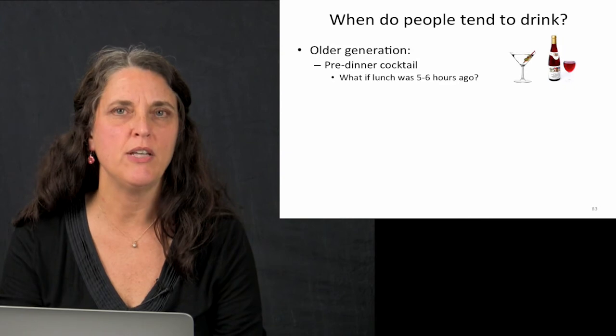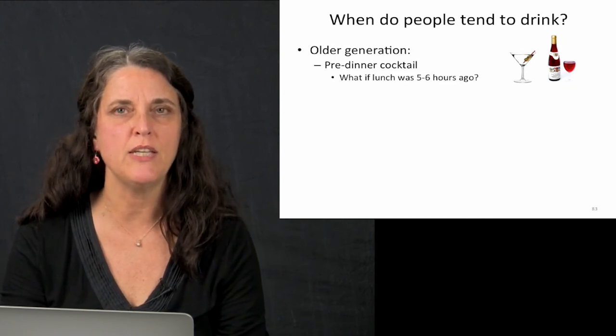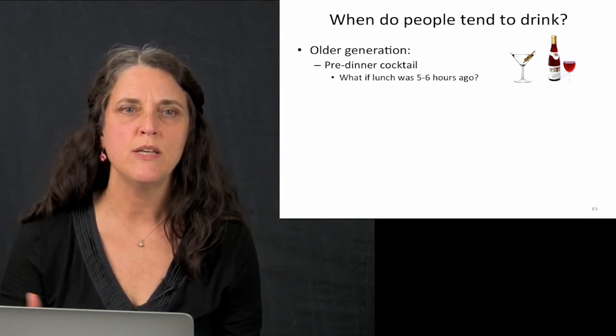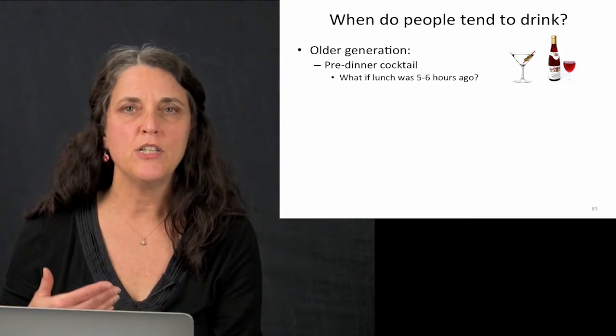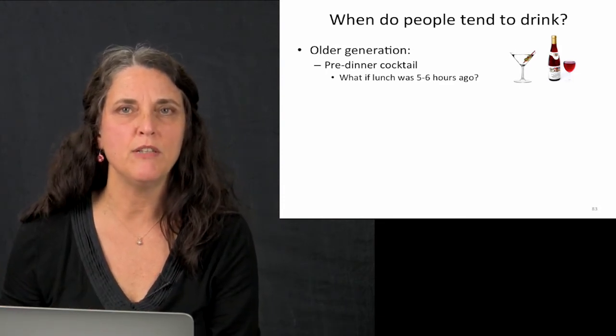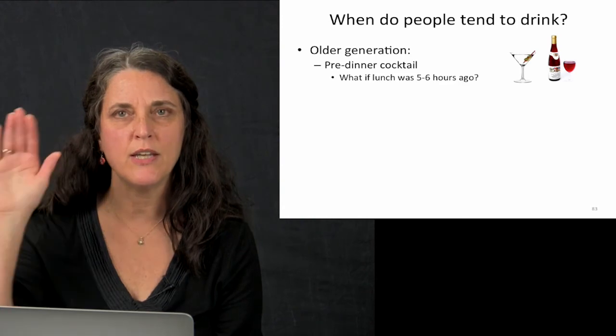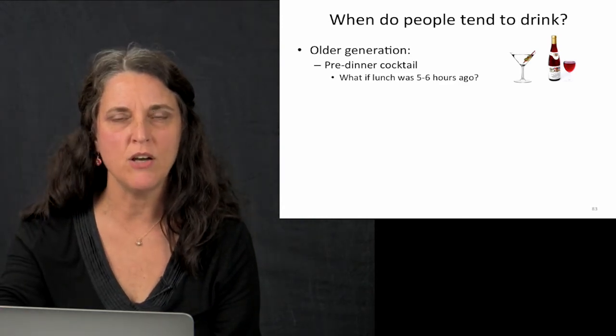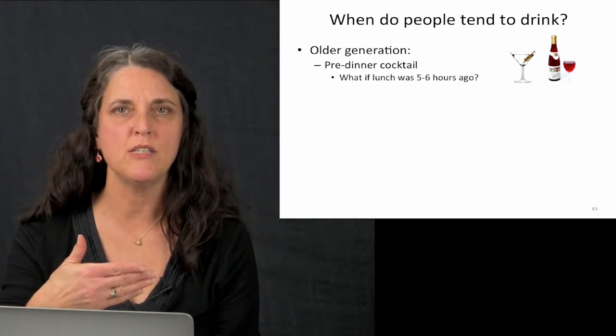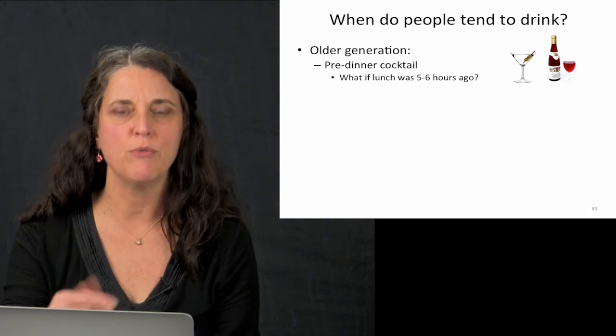What if lunch was five or six hours ago? There's no carbohydrate left from lunch. If you're drinking in that time zone, you're using only the glycogen and gluconeogenesis from the liver. The minute you start drinking and your liver is processing that alcohol, you're impairing the release of glucose from the liver. And you're at risk for low.